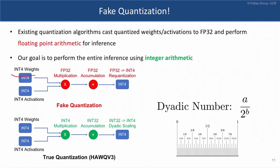They cast to FP32, then perform FP32 multiplication and FP32 accumulation to compute the result. Once they compute the result, at the end they perform the so-called re-quantization step, where they go from 32-bit floating point format to a 4-bit format.